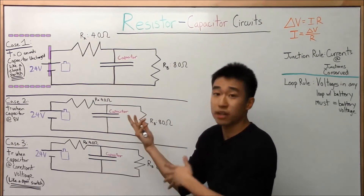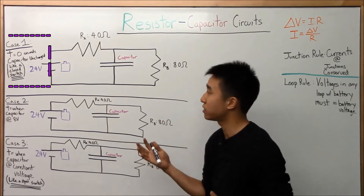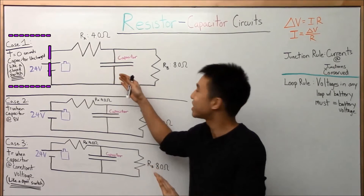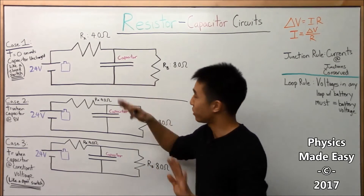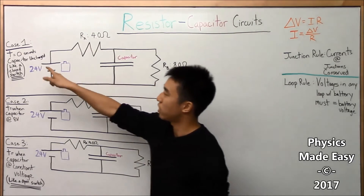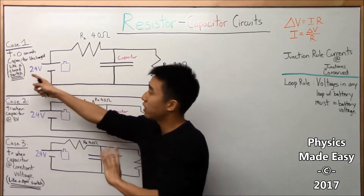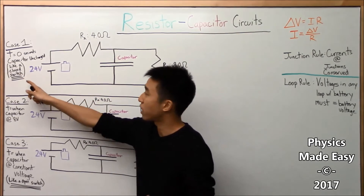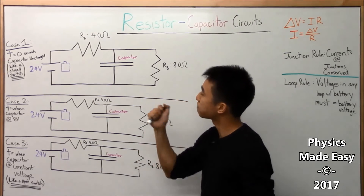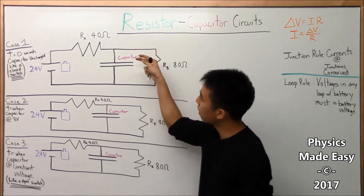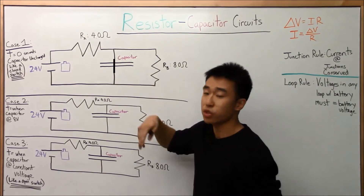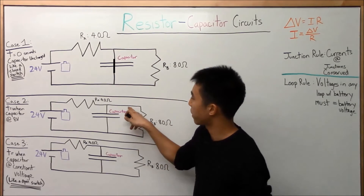For Case 1, at time equal to zero seconds — you freeze time — the capacitor is uncharged, meaning both plates are totally neutral. Professor Duffy tells you that an uncharged capacitor is like a closed switch, meaning it's just like a wire. It's a closed switch with no resistance whatsoever, just like a regular wire.